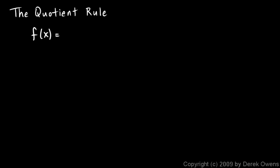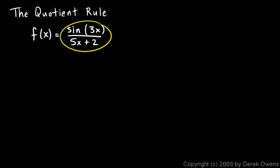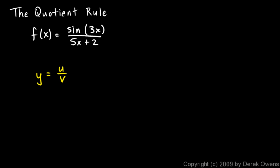We're still talking about derivatives and now it's time to learn about the quotient rule — a rule for taking the derivative of a function that is the quotient of two other functions. For example, suppose our function of x is sine of 3x divided by 5x plus 2. We can think of it as one function over another. The general form is y equals u over v, where u and v are both understood to be differentiable functions of x.